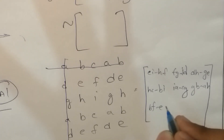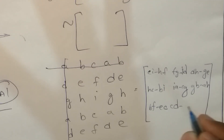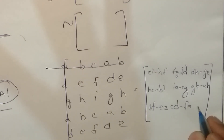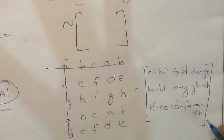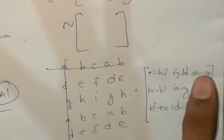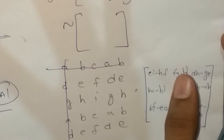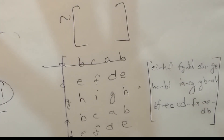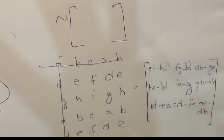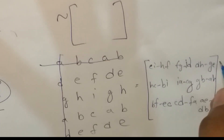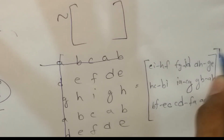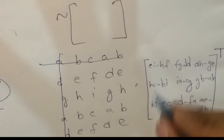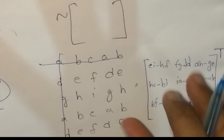Now, since the cofactor involves terms like cd minus fa, e minus db — you can choose the concept. I'm going to write this out here. If you want to write the same matrix elements out, follow along.